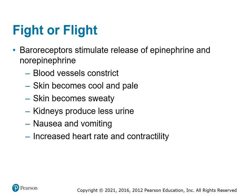When you are in shock, your body activates the fight-or-flight sympathetic nervous system. Baroreceptors release epinephrine and norepinephrine. Epinephrine causes blood vessel constriction and produces cool, pale, sweaty skin. It shuts down kidney activity causing decreased urine output, moves blood from the digestive system to more critical systems — which can cause nausea and vomiting — and increases heart rate and contractility to raise blood pressure. Epinephrine and norepinephrine are compensating for whatever is causing the hypoperfusion.